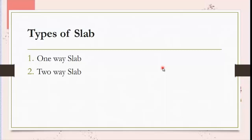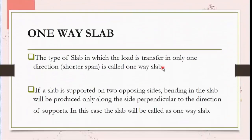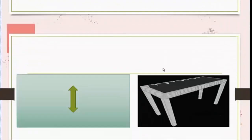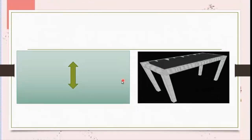The first type of slab on the basis of load transfer mechanism is the one-way slab. The type of slab in which the load is transferred only in one direction — that is the shorter direction — is called a one-way slab. If a slab is supported only on two opposing sides, bending will be produced in the direction perpendicular to the support and the slab will be termed a one-way slab. You can see in the picture that load is only transferred in the shorter span, and the bending or deflection is produced only in the shorter span.